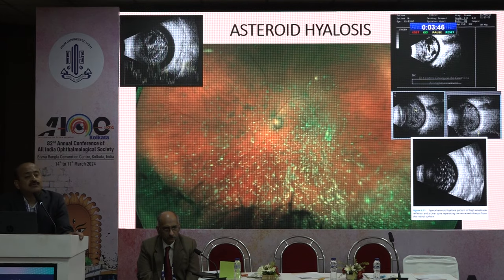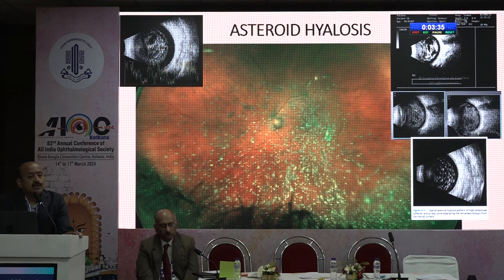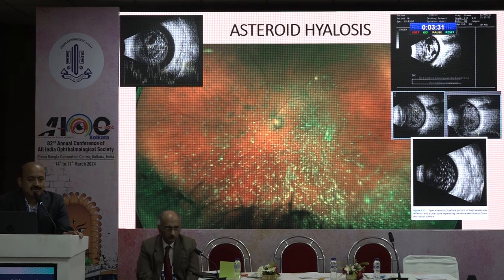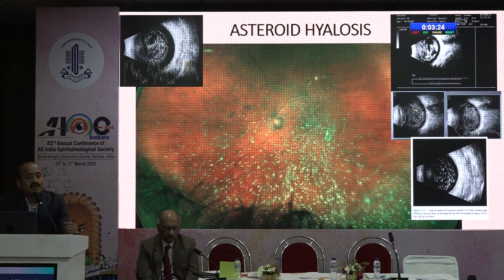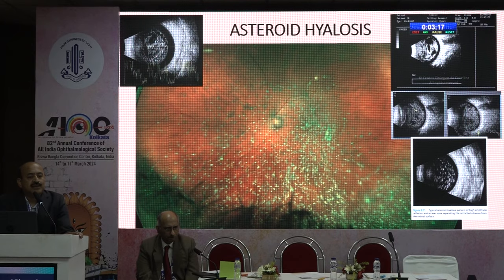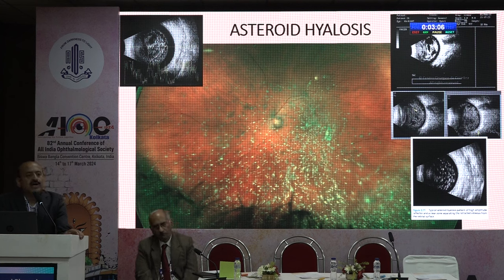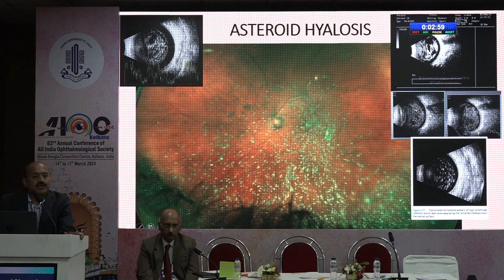A very common group of vitreous floaters with whitish and yellowish objects is asteroid hyalosis. Most of the time you can see these floaters, but patients may not always complain of them, and their vision may be excellent, because light can pass through and the shadows cast on the retina are very small. On ultrasound — particularly useful in a patient with mature cataract — asteroid hyalosis has a very typical feature: a clear anechoic area behind a clump of vitreous opacity. This is very characteristic on the B-scan.